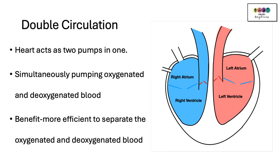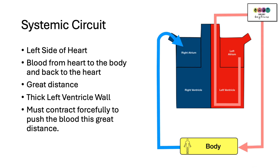Double circulation. The heart acts as two pumps in one simultaneously, pumping oxygenated and deoxygenated blood around the body at the same time. The benefit of double circulation is that it's much more efficient to separate the oxygenated and deoxygenated blood. Double circulation is made up of two circuits, the first of which is the systemic circuit. Blood is pumped from the left side of the heart to the body and back — a very great distance. The reason why there is a very thick left ventricle wall is because that ventricle has to contract forcibly to push the blood this very great distance.